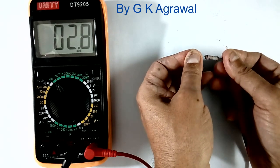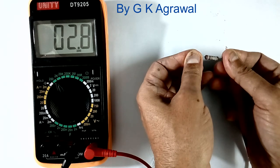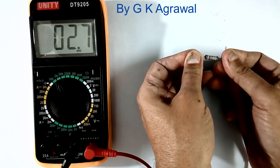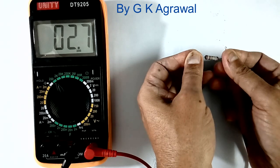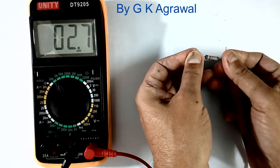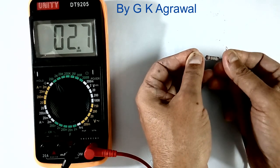So resistance value is not 2.8 ohms. Resistance value is 2.8 minus 0.6 is equal to 2.2 ohms. So this is the problem of measuring low value resistance.